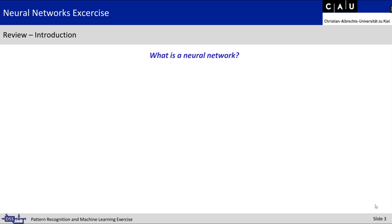Let's start with the introduction to neural networks. We have to answer the question: what are neural networks? Neural networks are based on our human brain, in which we have cells called neurons. Those neurons are connected to each other in a very special way and give us the ability to think and to remember.